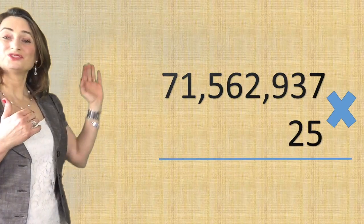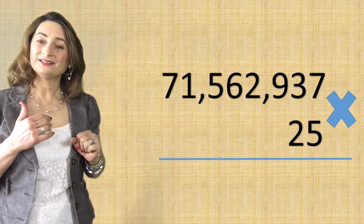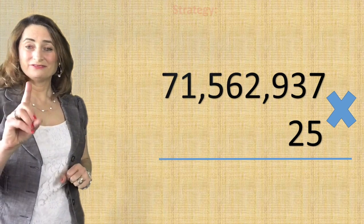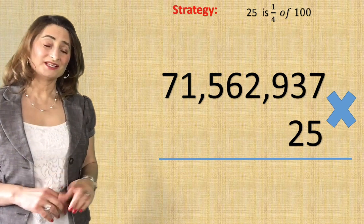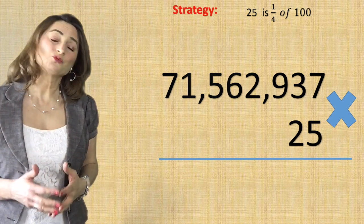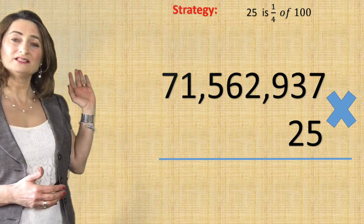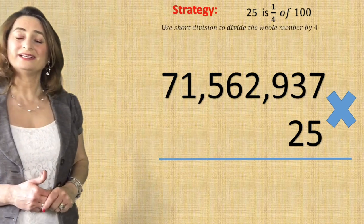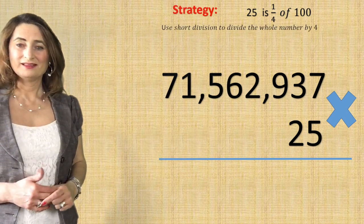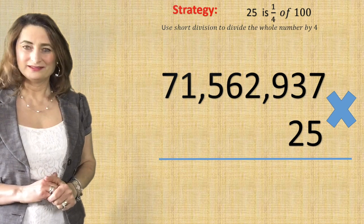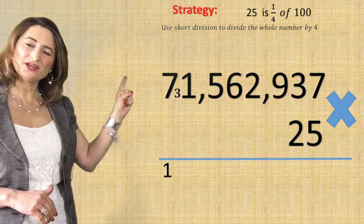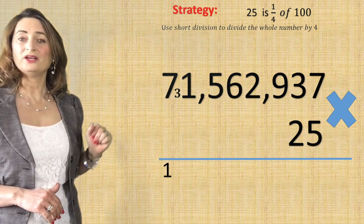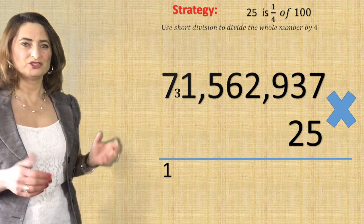Now I will reveal his strategy for finding the answer to multiply this 71-million number by 25. The first trick is the number 25. The strategy he used is that 25 is one-fourth of a hundred. So if I take this big number and divide each digit by four in my head, I will get the answer. So 7 divided by 4 is 1 with a remainder of 3. Just put that 3 right behind the 1 — now you have 31. And that's called short division.